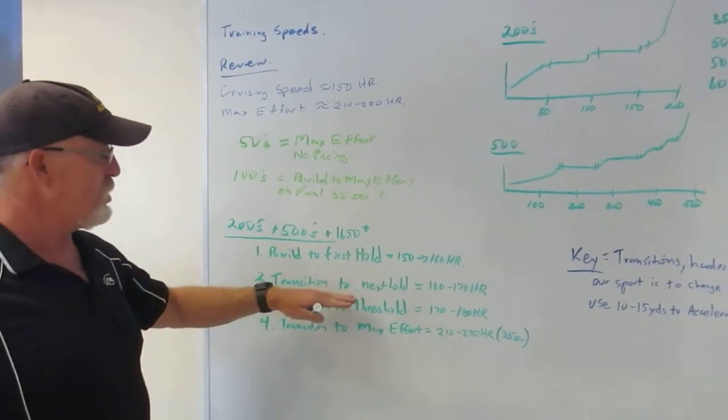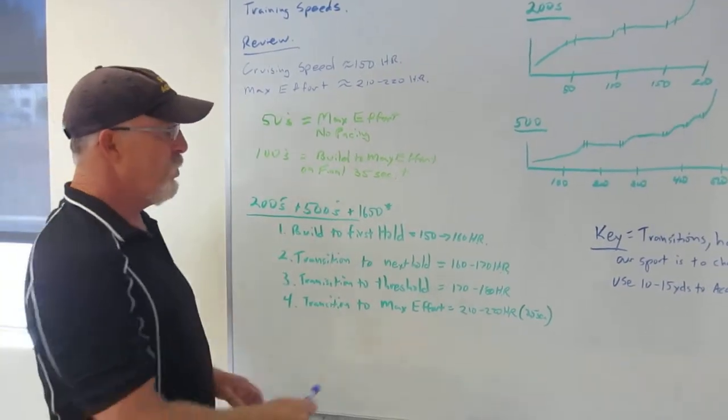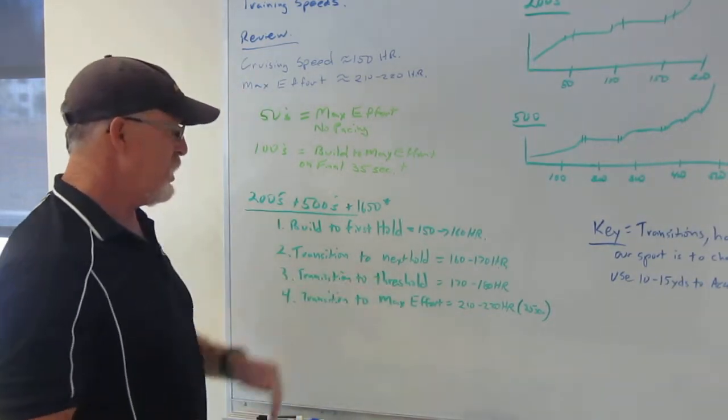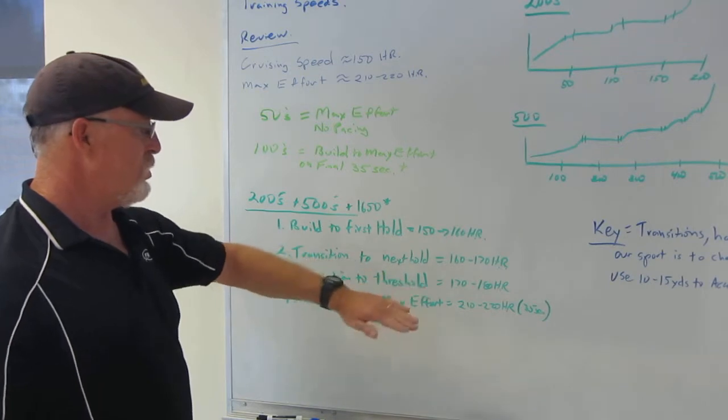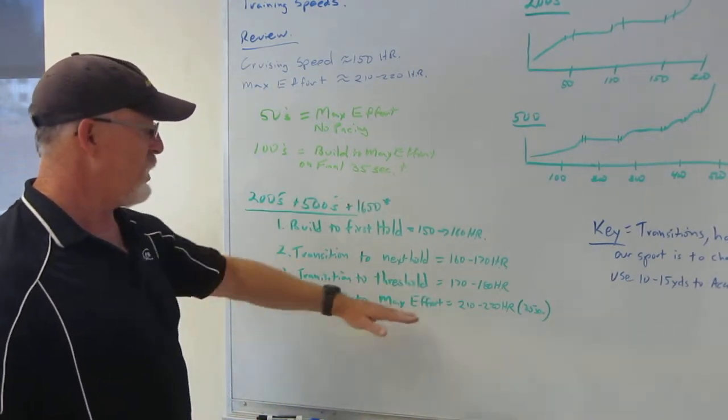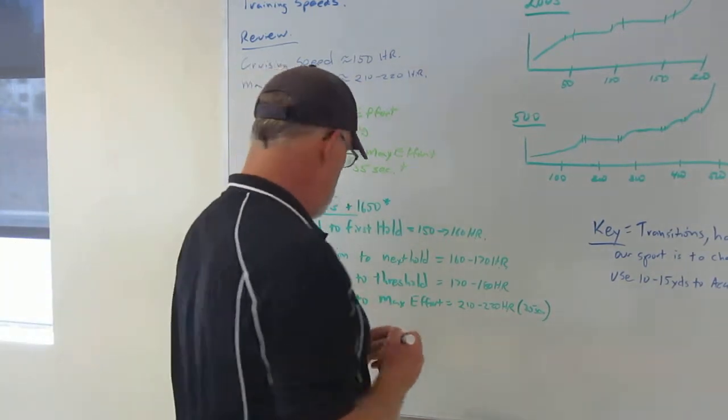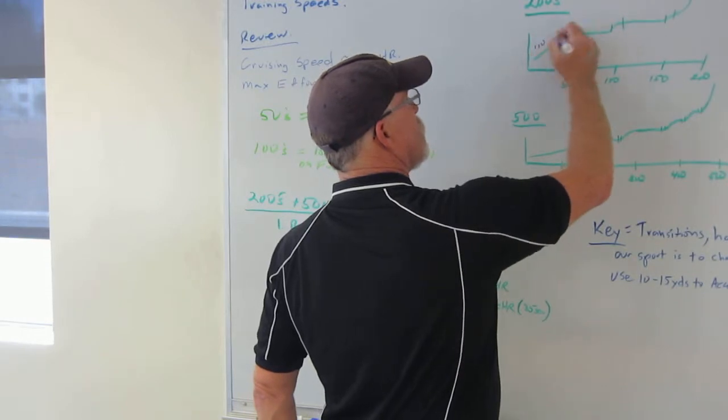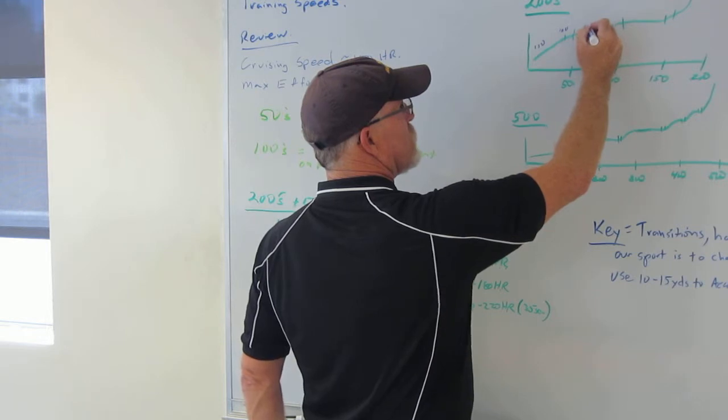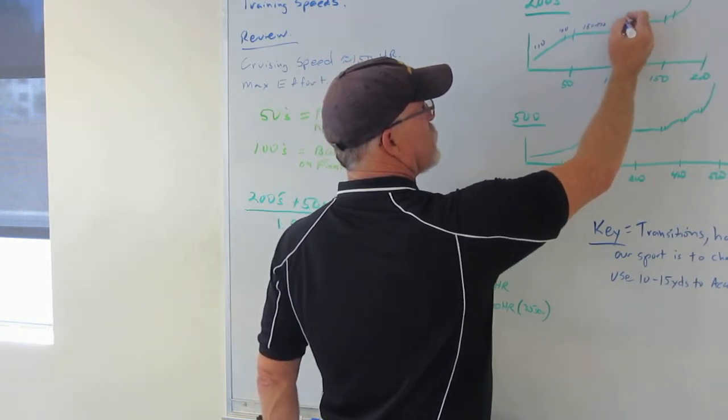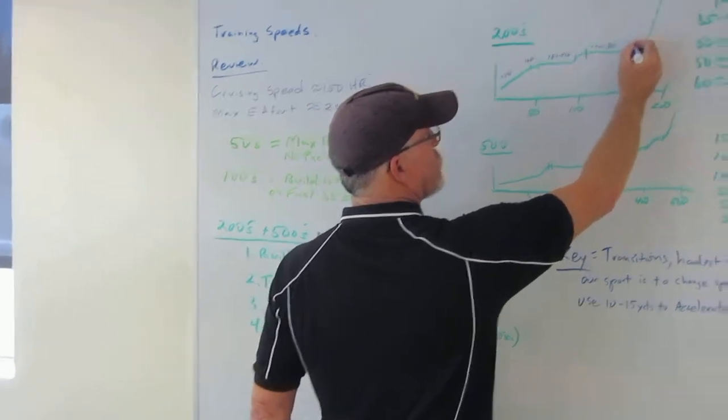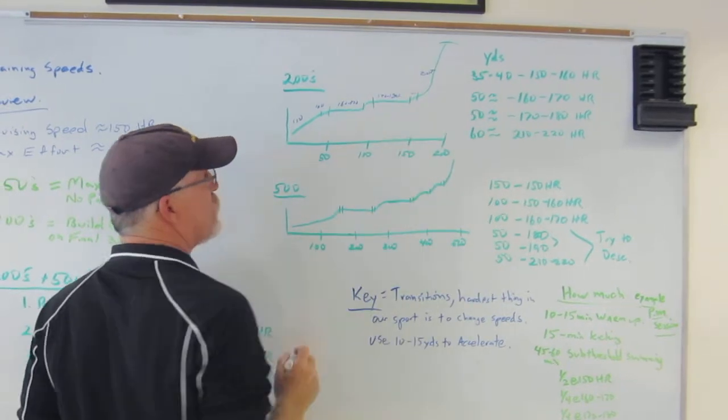The first transition, you make the transition to the next hold where you're now going to try to hold 160 to 170 heart rate. And then the third transition to where you would be at threshold at 170 to 180 heart rate. And then the transition to max effort. So if you look at the 200s, this would be like 150 up to 160, and you make the transition. And you hold 160 to 170. You make the transition up to 170 to 180. And you make the transition again to 200 plus on your heart rate.